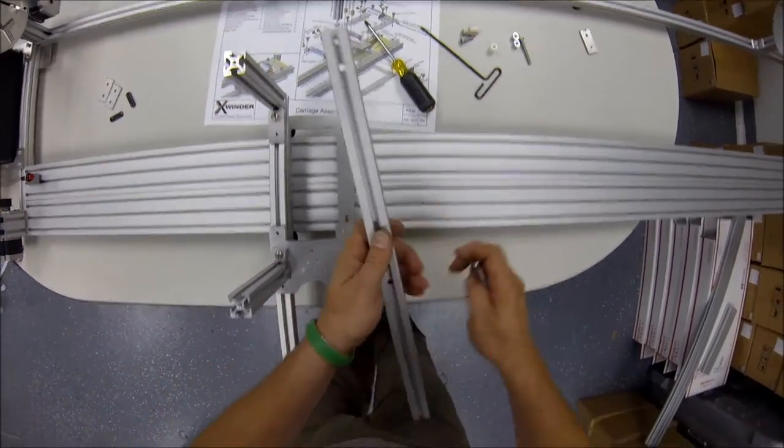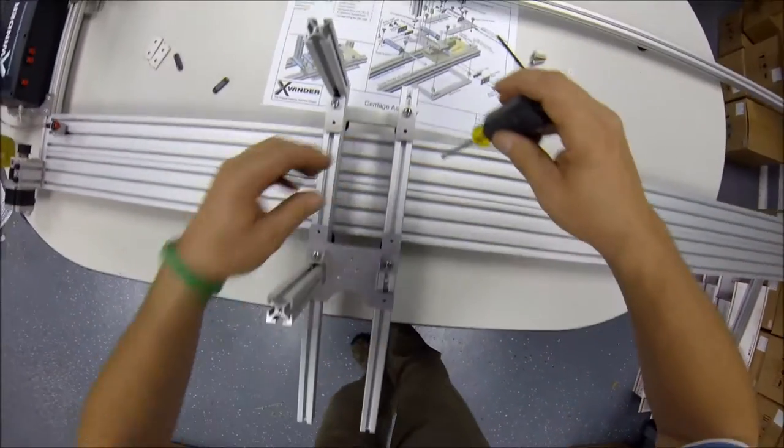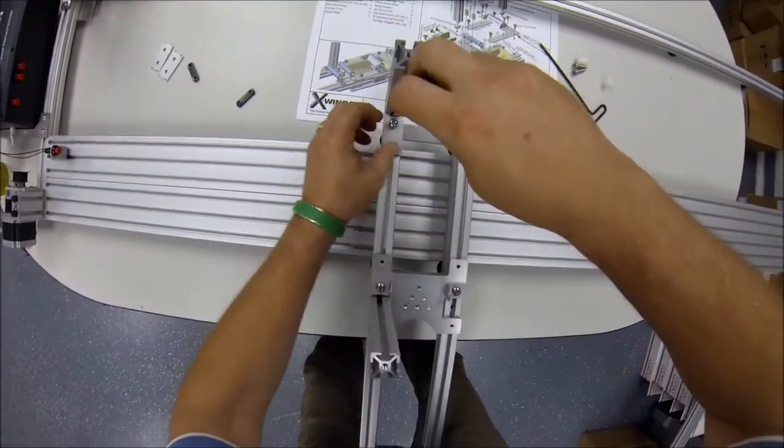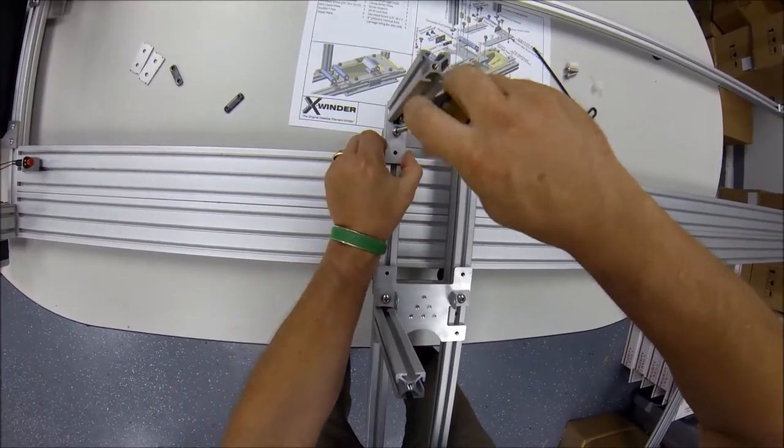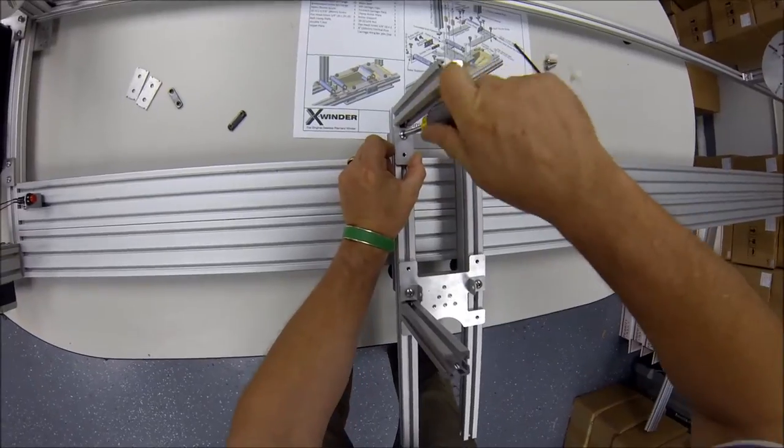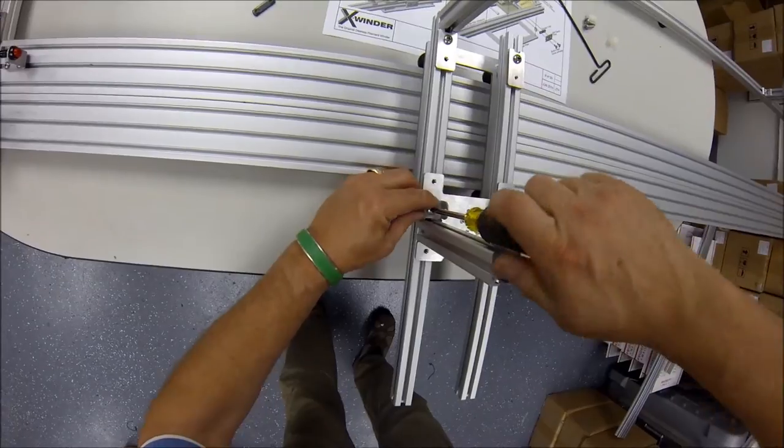We'll do the same now for the right carriage wing bar. So this basically is the structural frame of the carriage assembly, and everything else will attach.